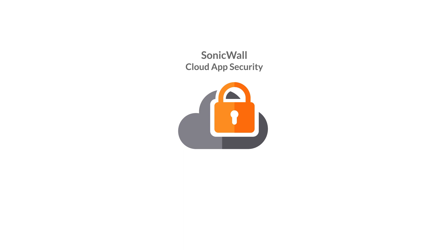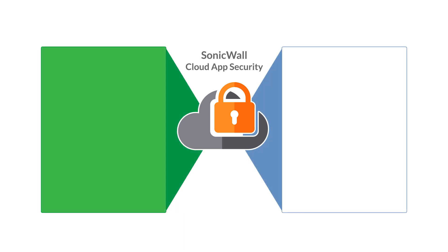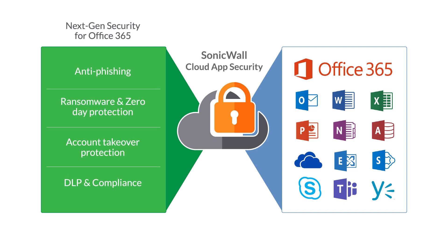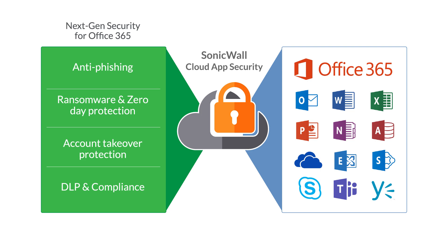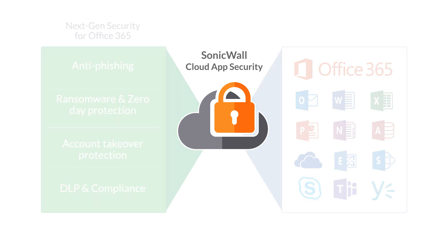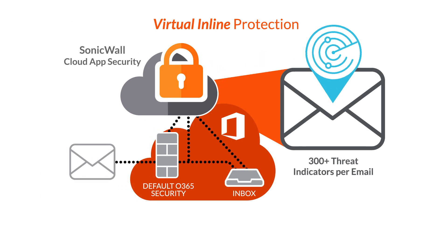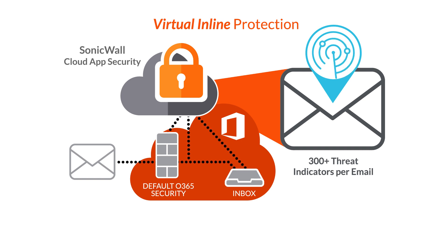SonicWall Cloud App Security is designed for cloud productivity suites such as Office 365, providing complete visibility and control by integrating with Office 365's native APIs. Cloud App Security uses virtual inline protection to stop malicious email before it reaches users' inboxes, and employs machine learning analysis to combat phishing attacks.